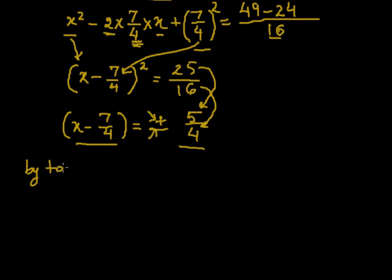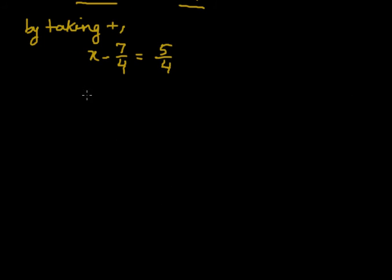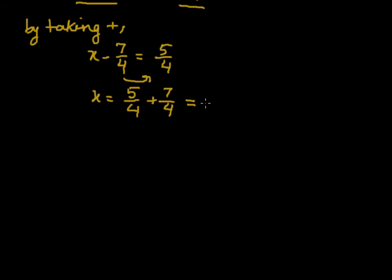First of all, by taking the plus sign: x minus 7 by 4 is equal to 5 by 4. Our objective is to find the values of x, so if we transfer this term to the right side, this will be 5 by 4 plus 7 by 4. The LCM is 4, which gives 5 plus 7, so the value of x would be equal to 12 by 4, which equals 3. That means the first value of x is 3.